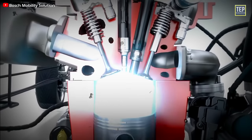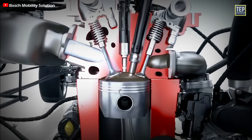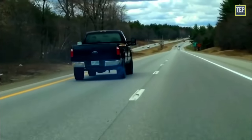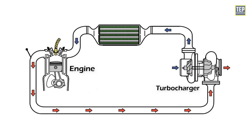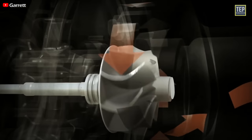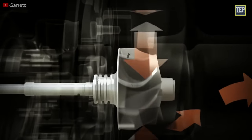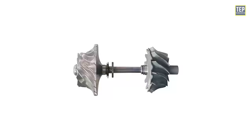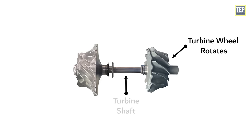As the engine is running, the exhaust gases would otherwise be wasted, but on a turbocharged engine these exhaust gases pass through the turbo. It spins one fan called the turbine. The turbine wheel is responsible for converting heat and pressure into rotational force. As the turbine wheel rotates, it spins the turbine shaft, which in turn spins the compressor wheel.